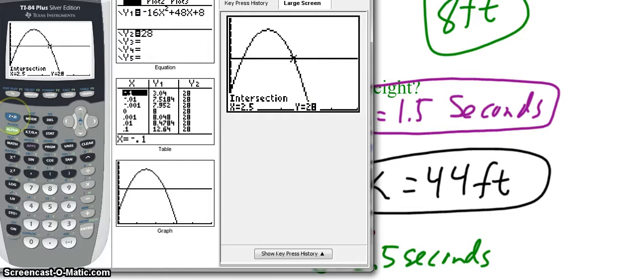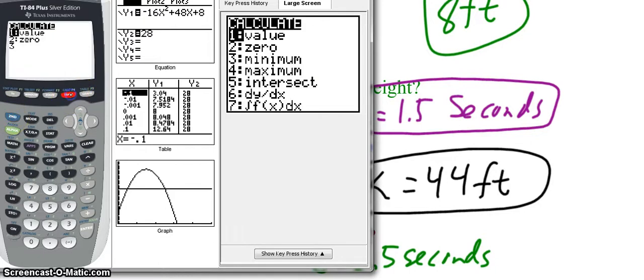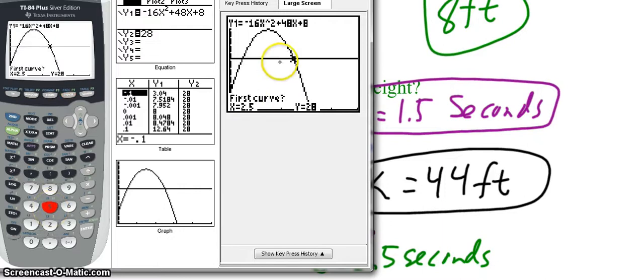So I'm going to go through that same process again. I'm going to hit second trace. Here I'm going to just hit number 5 because that's a shortcut. Now I'm going to move the cursor so it's closer to the intersection that I'm looking for.